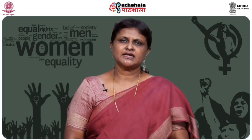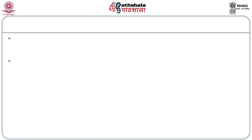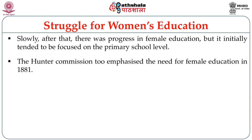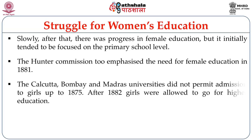The next commission that came to India was the Hunter Commission, which also emphasized the need for female education. The commission came in the year 1881. In 1857, three universities were established in India — Madras, Bombay, and Calcutta — but disheartening was that these universities did not permit girls to be graduated from them. It was only as late as 1875 that permission was given to them.